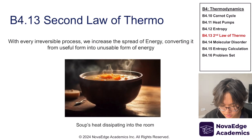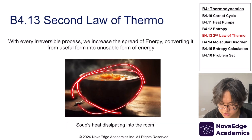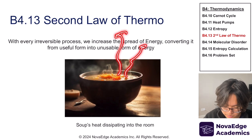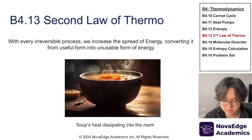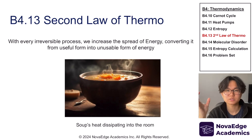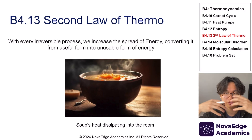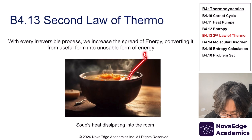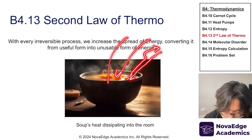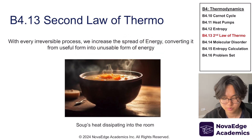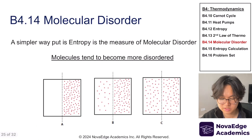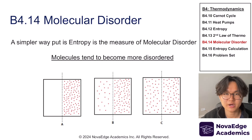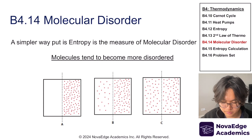Another example: hot soup dissipating heat into a room. The heat spreads out into the room and we can't practically capture it and use it for something useful. Critically, it doesn't go the other way — heat doesn't spontaneously concentrate back into the soup. That's why we say energy is always dissipated: it spreads out and never spontaneously reconcentrates. This is the essence of the second law of thermodynamics.